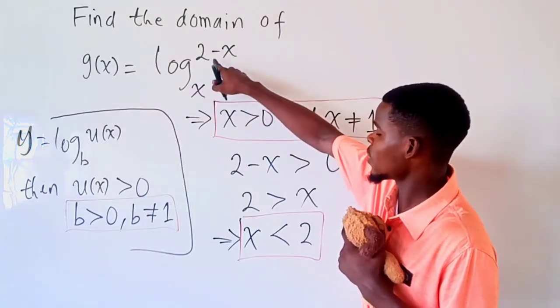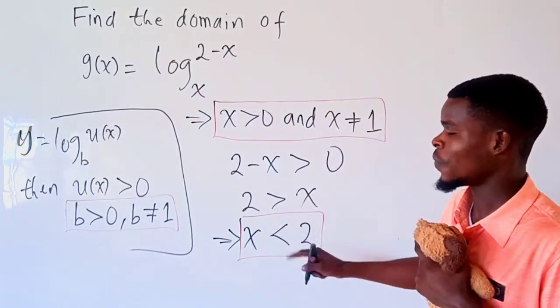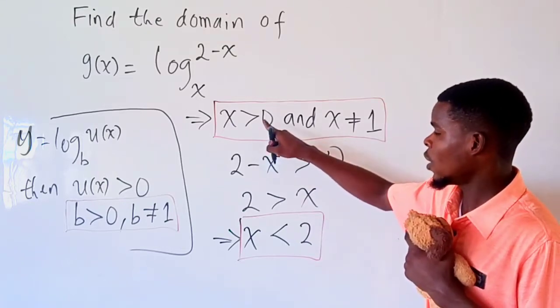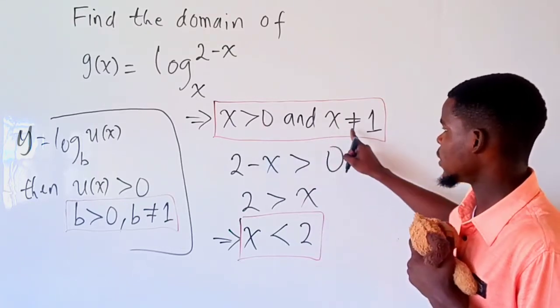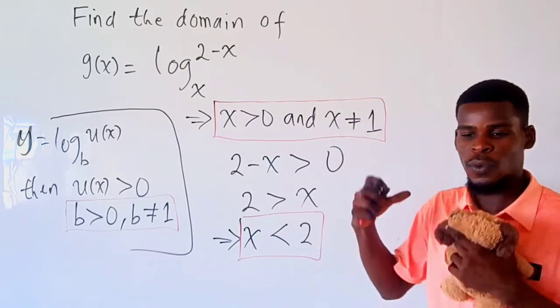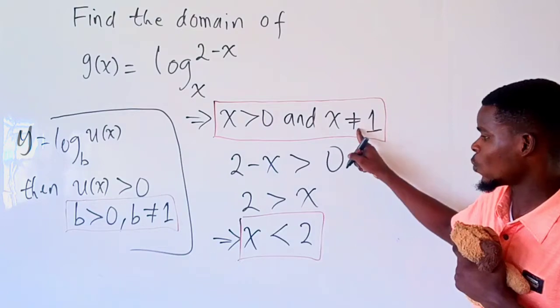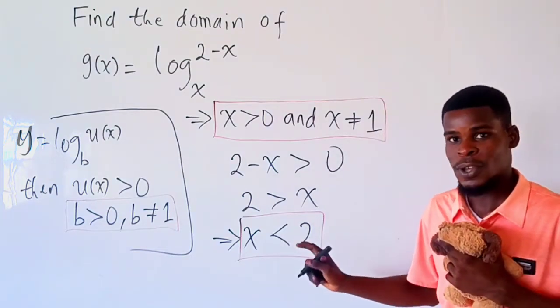So this right here is also another thing to consider: that this function will be defined as long as x is less than 2. And as well for the base, the base consists of every positive real number and not equal to one. So if you want to intersect these two intervals, this is greater than zero and not one, but this one is less than two.